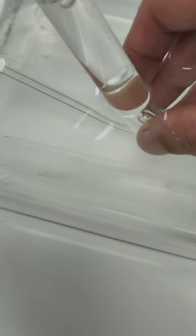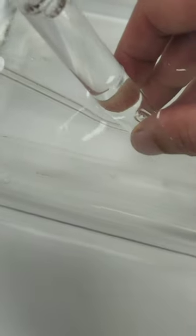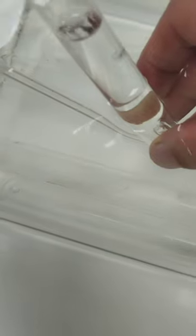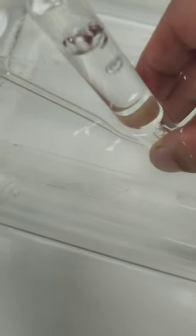Here you can see I'm using downward displacement of water to collect the ethene, which is gaseous, into a test tube. I'm going to seal this test tube off and use some bromine water to test for the presence of that ethene.